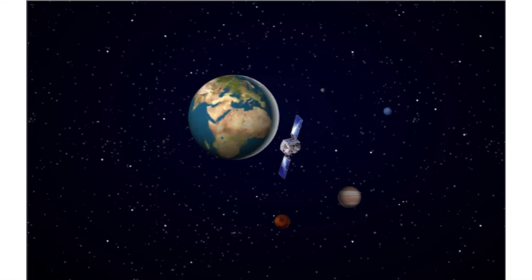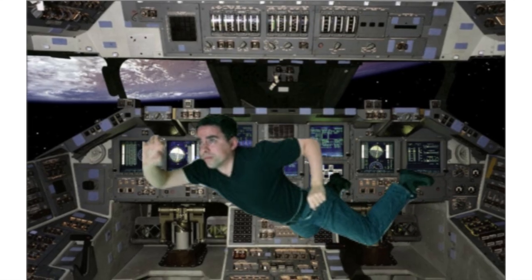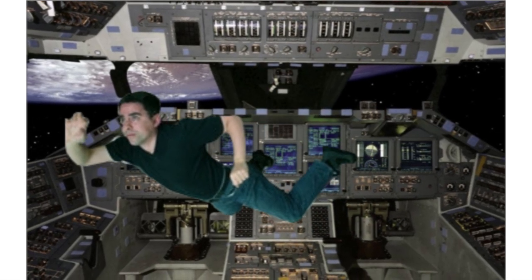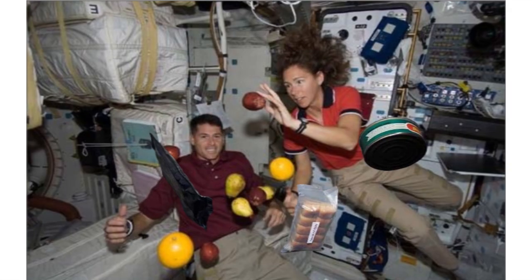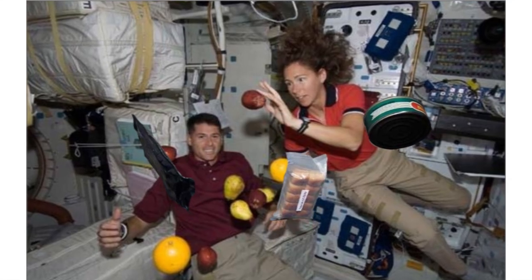When someone goes to space, they do not experience the same as being on the earth. People who are in spaceship float from one end to the other. Water floats around as blobs. Food packets too float around. Hair keeps standing all the time.